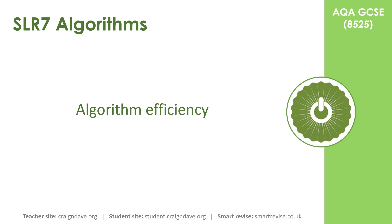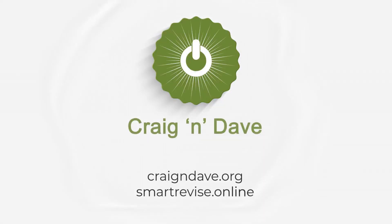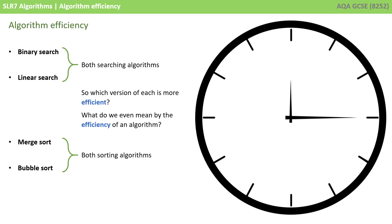In this video, we'll be taking a look at algorithm efficiency. There are four algorithms you need to know about for the GCSE. There are two searching algorithms — the binary and linear search — and two sorting algorithms — the merge and bubble sort.